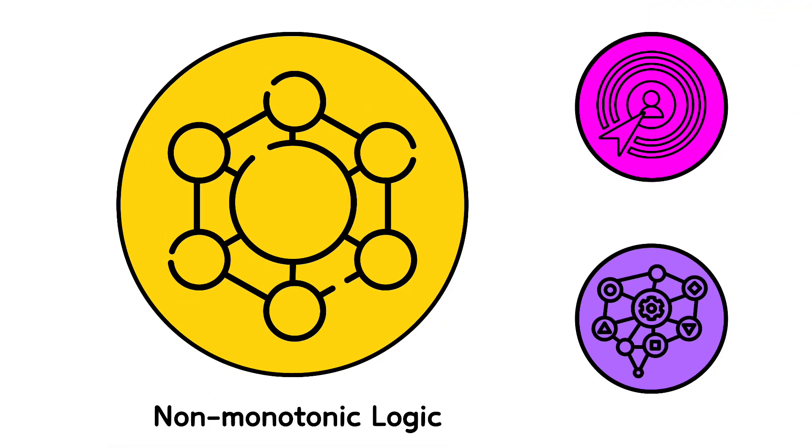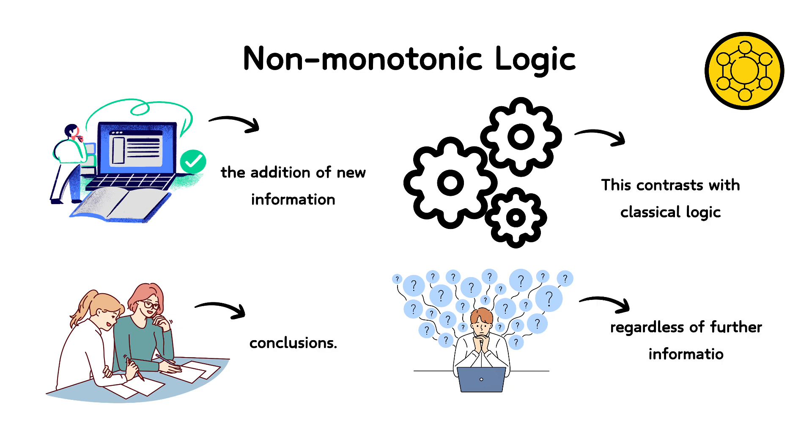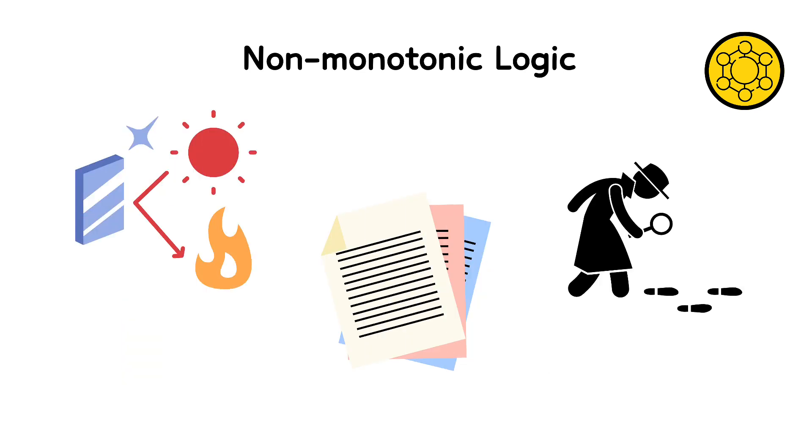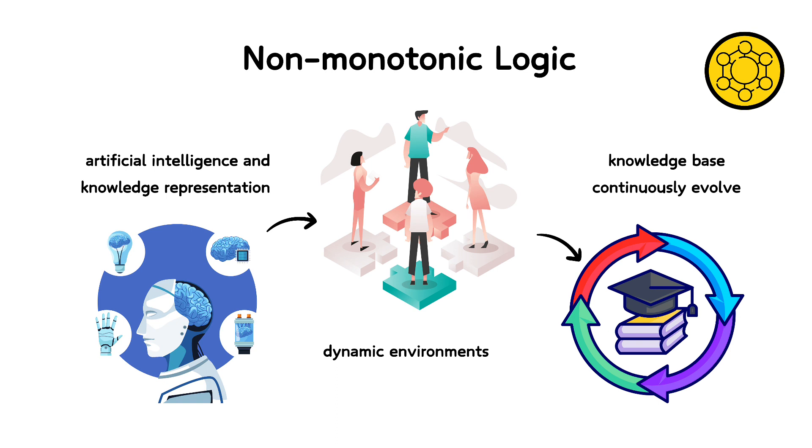Non-monotonic logic is a type of logic in which the addition of new information can invalidate previous conclusions. This contrasts with classical logic, where once something is concluded, it remains concluded regardless of further information. Non-monotonic logic reflects how we often reason in real life. Our conclusions are provisional and can change with new evidence. This logic is crucial in artificial intelligence and knowledge representation, especially in dynamic environments where the context and knowledge base continuously evolve, requiring systems that can adapt and update their conclusions accordingly.